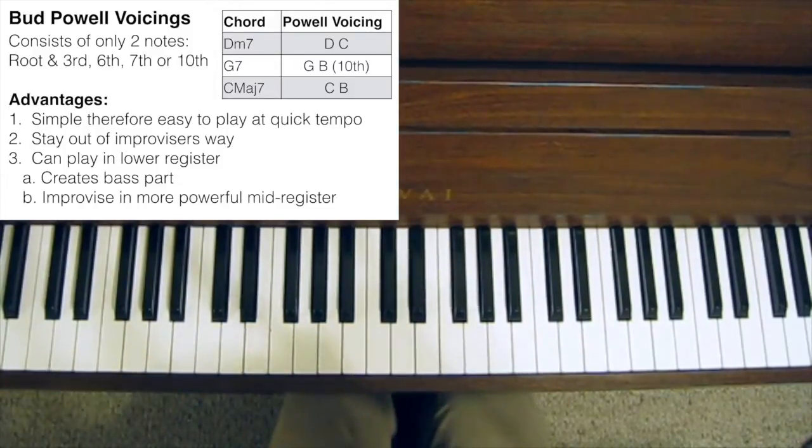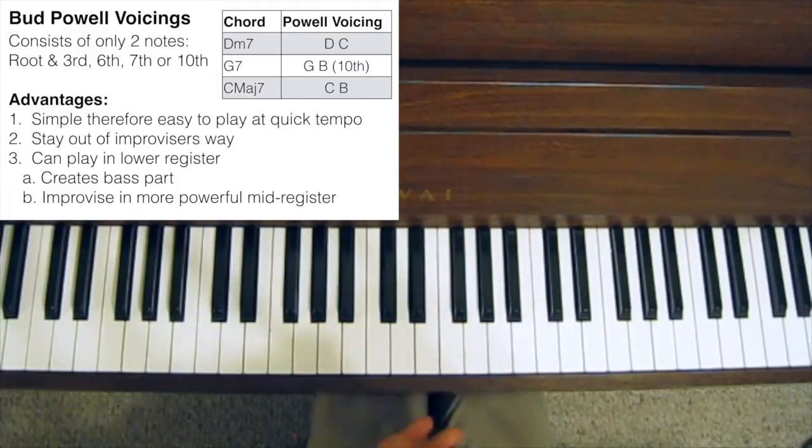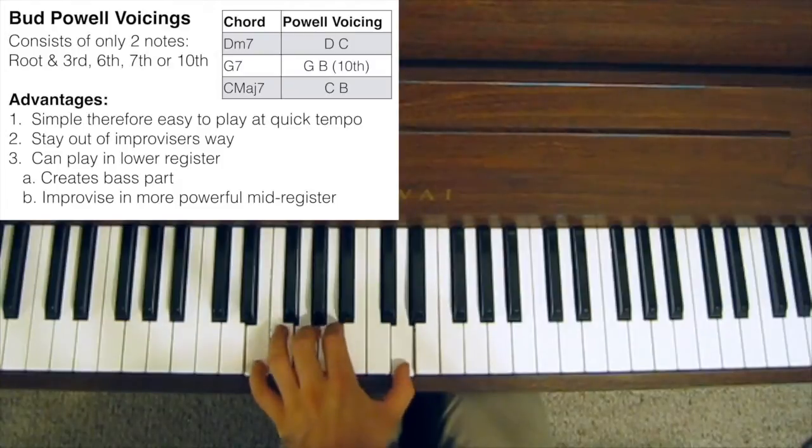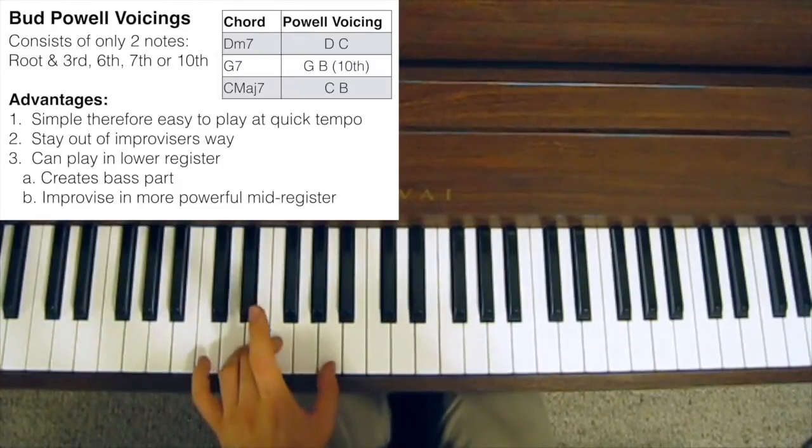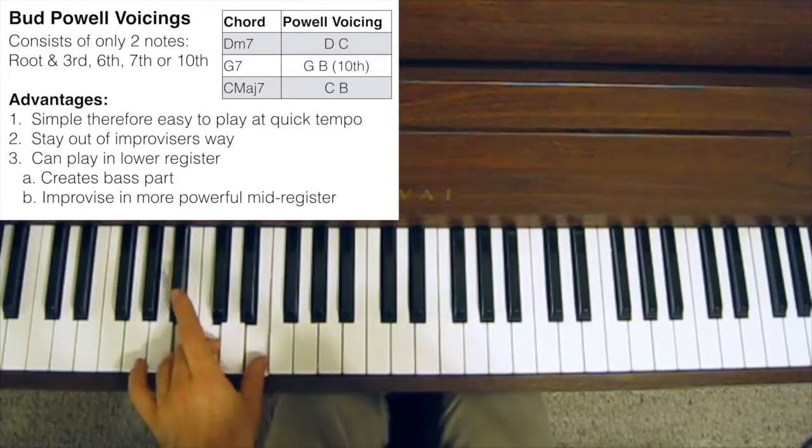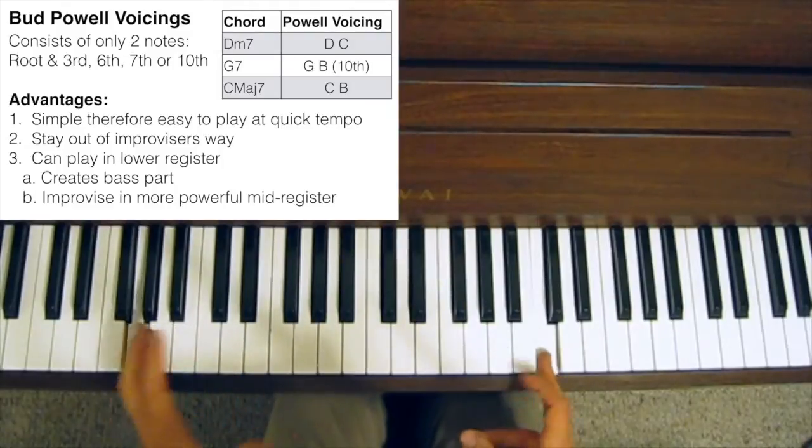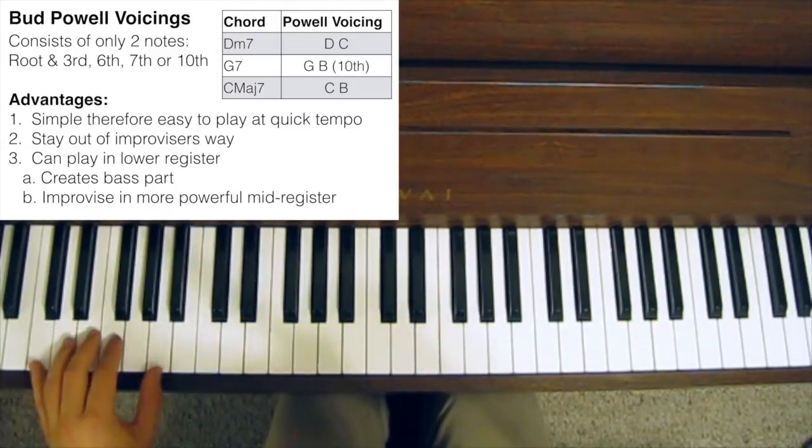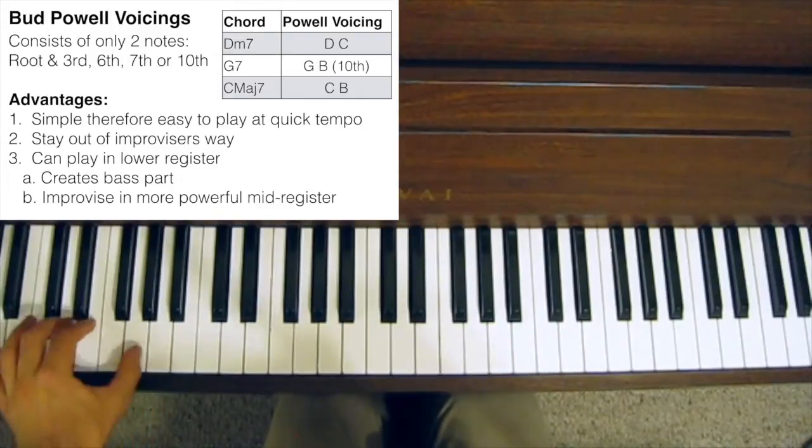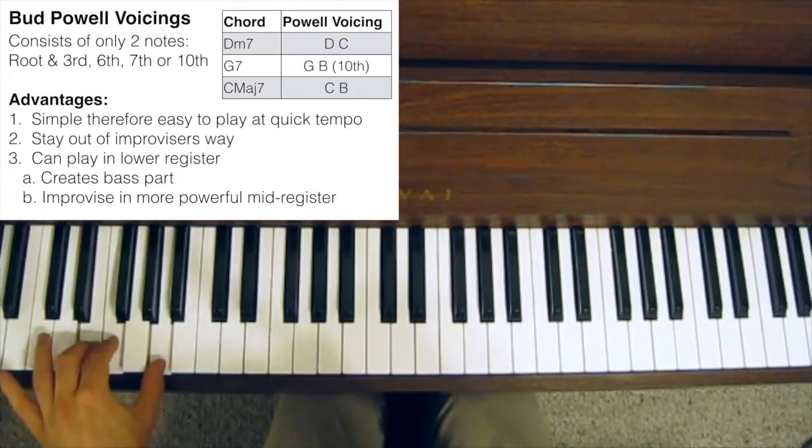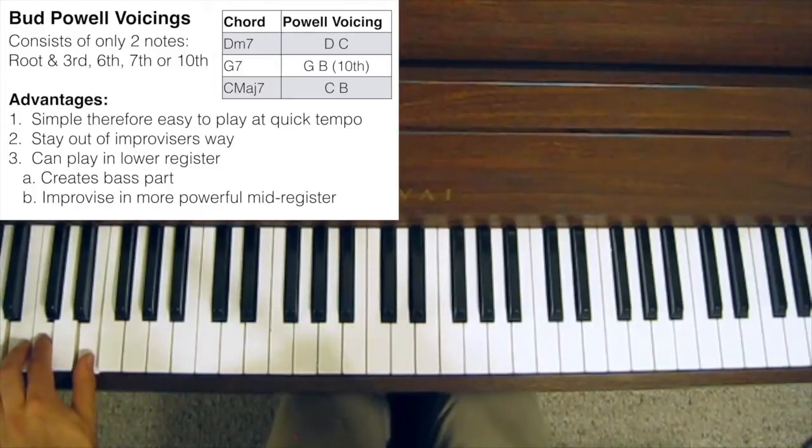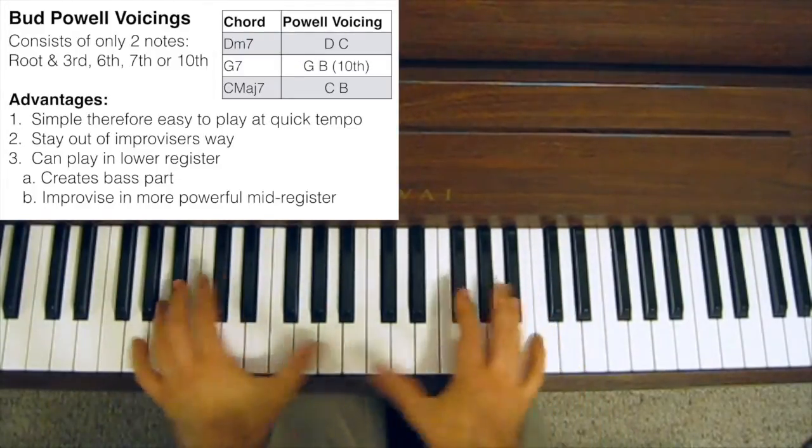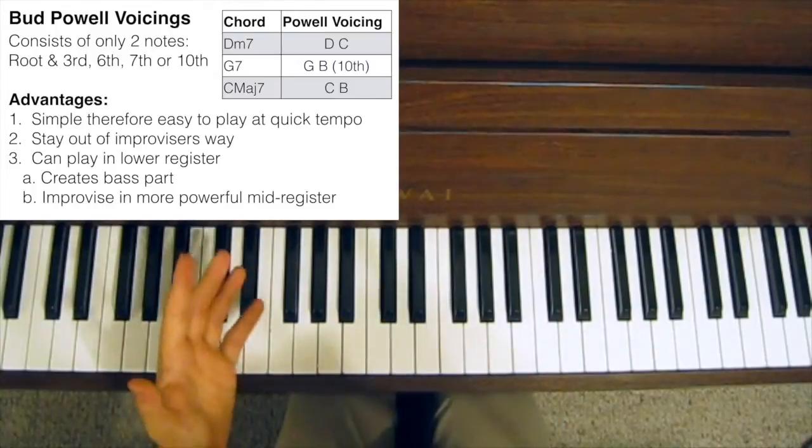Whereas the other left-hand chord voicings that I went over in past videos, like the rootless Bill Evans-style chord voicing, or the Thelonious Monk-style chord voicing, you can only really play them in this register here, because if you get too low, it just starts to sound muddy and unpleasant. So really, you're restricted to this sort of middle range of the piano, if you're using those chord voicings.